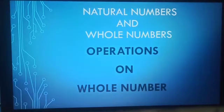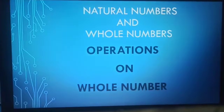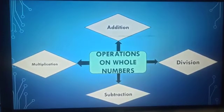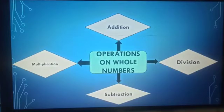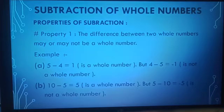Hello students. Continuing our chapter on natural numbers and whole numbers, we will discuss operations on whole numbers. There are four types of operations on whole numbers: addition, subtraction, multiplication, and division. We already discussed properties of addition in the previous session. Today, we will discuss properties of subtraction.